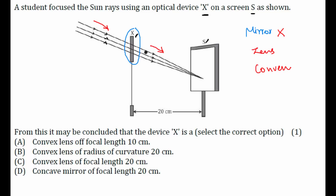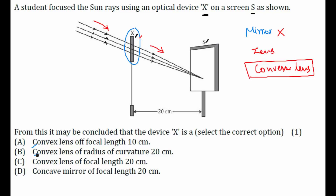The rays are converging, so it is a convex lens. A concave lens would diverge the rays, not converge them. Since device X is converging the rays, it is a convex lens — not a mirror and not a concave lens.